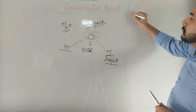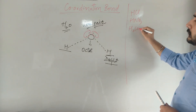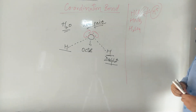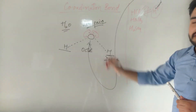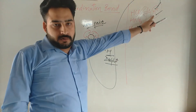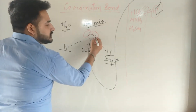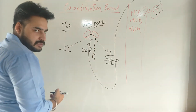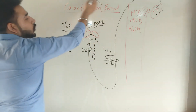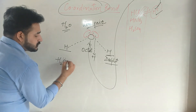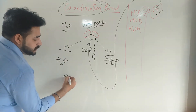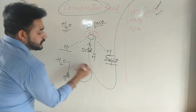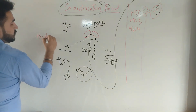Lone pair electrons are those that do not participate in bond formation. Acids like HNO₃ and H₂SO₄ when dissolved in water release H⁺. When we want to combine H⁺ with the water molecule, H⁺ has no electron. So the oxygen in water donates its lone pair of electrons to H⁺ and shares those electrons. This type of bond is called a coordination bond. The result is the hydronium ion (H₃O⁺).